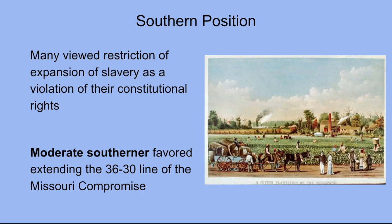The Southern position: most Southern whites viewed any attempt to restrict the expansion of slavery as a violation of their constitutional right to take and use their property as they wished. They saw both the abolitionists and Free Soilers as intent on the ultimate destruction of slavery and the Southern way of life. More moderate Southerners favored extending the Missouri Compromise Line of 36°30' westward to the Pacific Ocean, permitting territories north of that line to be free territories.